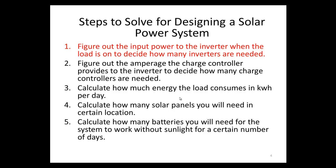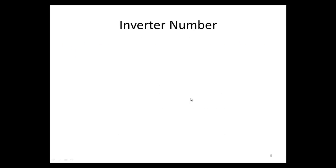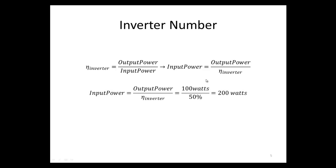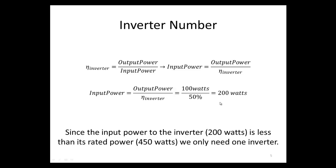Step one: we need to figure out the input power to the inverter when the load is on, to decide how many inverters are needed. The general efficiency equation is efficiency equals output power over input power. Since we know the output power (100 watts) and the efficiency (50%), we solve for input power: input power equals output power divided by efficiency, which gives us 200 watts. Since the maximum power rating of the inverter is 450 watts and we're only supplying 200 watts, we only need one inverter.